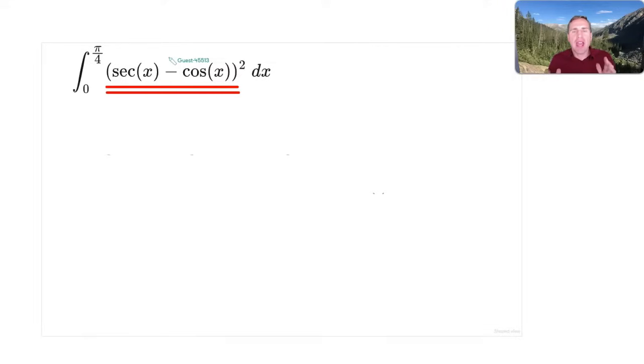So here we have a Calculus 2 integral with some trigonometric functions for which we have to evaluate this integral using methods of reducing it to integrals that we can integrate. So let's take a closer look at the problem. It's the integral from 0 to π/4 of (sec(x) - cos(x))² dx.